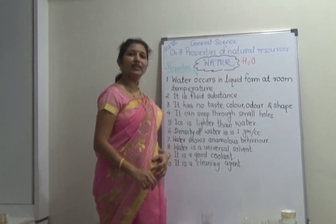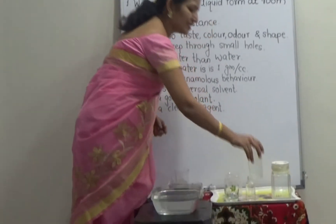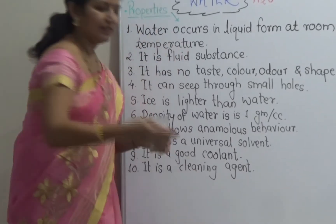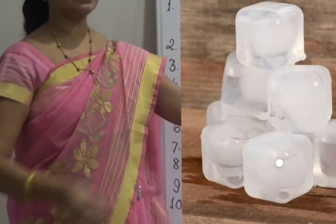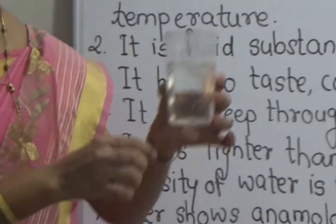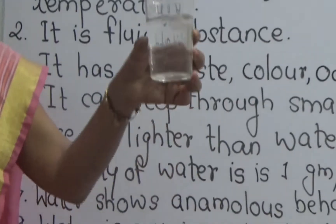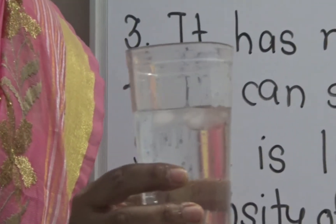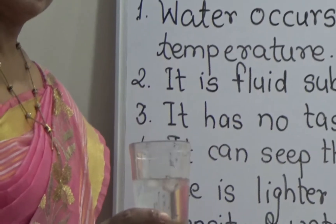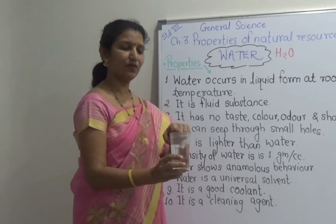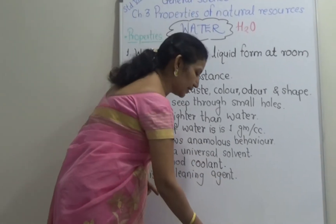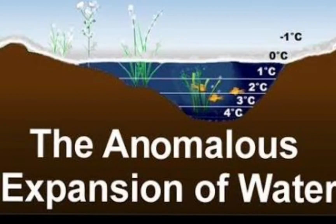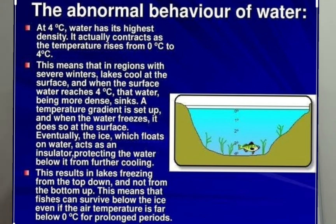The density of water is 1 gram per cubic centimeter. I will explain what density is in the next unit. We have to see that ice is lighter than water. Here, these are ice crystals, and when they are placed in this glass, you can see these ice crystals are floating on water. Why do they float? Because they have low density — lower density than water — so these ice crystals float on water. They are lighter than water. In this way, we have studied that ice is lighter than water. Water shows anomalous behavior, and that anomalous behavior we will see in detail in the next unit.